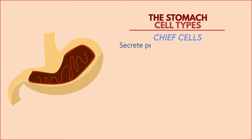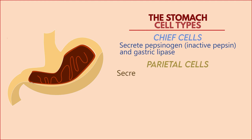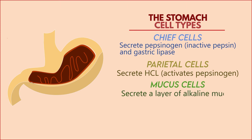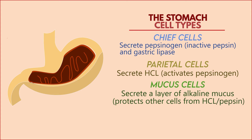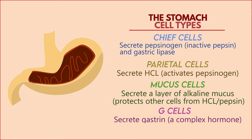Chief cells secrete pepsinogen, the inactivated form of pepsin, a potent protein-digesting enzyme, and gastric lipase, which digests lipids. Parietal cells secrete hydrochloric acid, required to activate pepsinogen. Mucus cells secrete a layer of alkaline mucus that protects other cells lining the stomach from hydrochloric acid and pepsin — otherwise most cells would get broken down by this protein-digesting enzyme and destroyed by the hydrochloric acid. Lastly, G cells secrete gastrin, a hormone that stimulates hydrochloric acid and pepsinogen release, promotes stomach contractions and motility, tightens the lower esophageal sphincter, and loosens the pyloric sphincter leading to the small intestine.